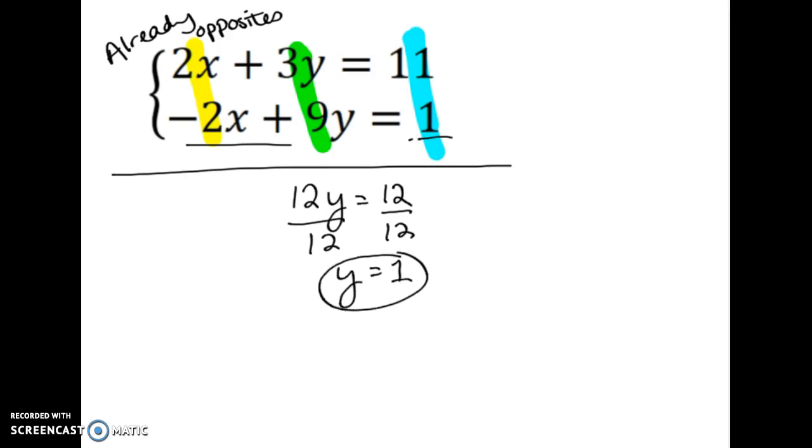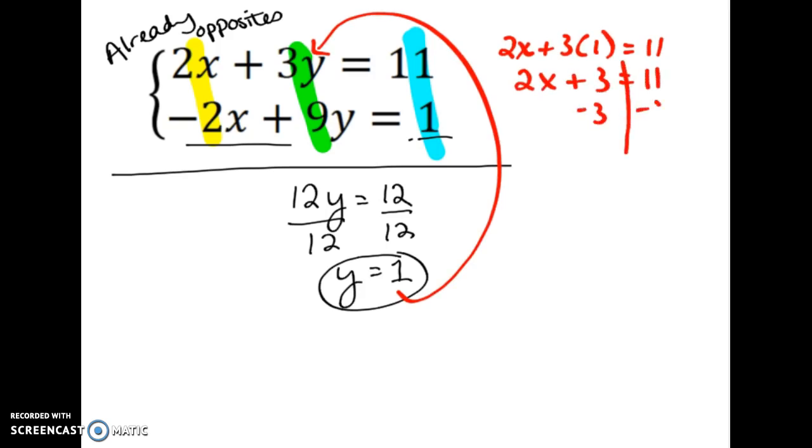Just like in substitution, I'm not done. I need to solve for the other variable. So if I go back, I plug in y into either equation, it doesn't really matter. I'll plug it into the first one. So I'm going to do 2x plus 3 times 1 equals 11. So 2x plus 3 equals 11. If I subtract 3 from both sides, I get 2x equals 8. And then divide by 2, I get x equals 4.